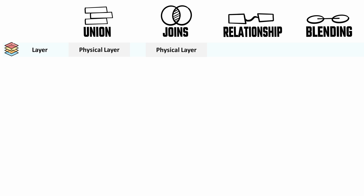The first point is which page and layer each method can be used in. Both unions and joins can be created at the data source page in the physical layer. Relationships can also be used at the data source page but in the logical layer. Finally, data blending can be used at the visualization level in the worksheet page.